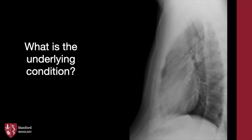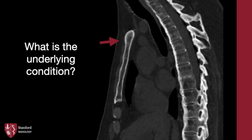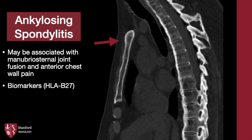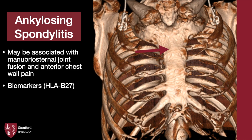Moving on to the next patient — what is the underlying condition? There are flowing anterior syndesmophytes in the thoracic spine. The manubral sternal joint is difficult to appreciate due to superimposition artifact, but sagittal CT better illustrates this area: the manubral sternal joint is entirely fused. Also note the diffuse fusion of the thoracic vertebral bodies and ossification of the interspinous ligaments, giving a bamboo appearance. This patient had ankylosing spondylitis. The manubral sternal joint fusion is commonly seen but not necessarily pathognomonic — other causes for fusion may be developmental or Paget's disease.